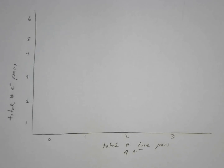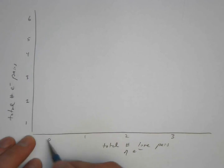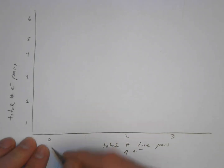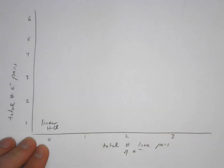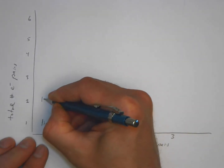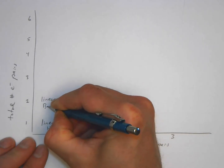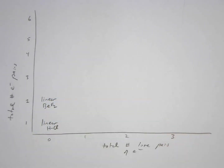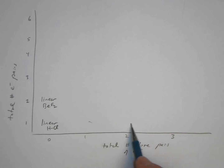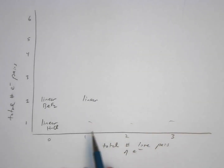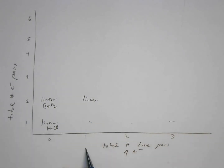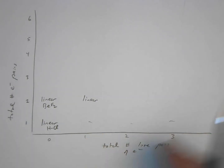If we have one pair of electrons and zero lone pairs of electrons, we have a linear molecule. An example would be HCl. Here we have a linear molecule, and this would be BF2. We didn't cover the idea of having two pairs of electrons and one lone pair — that would be a linear molecule too.